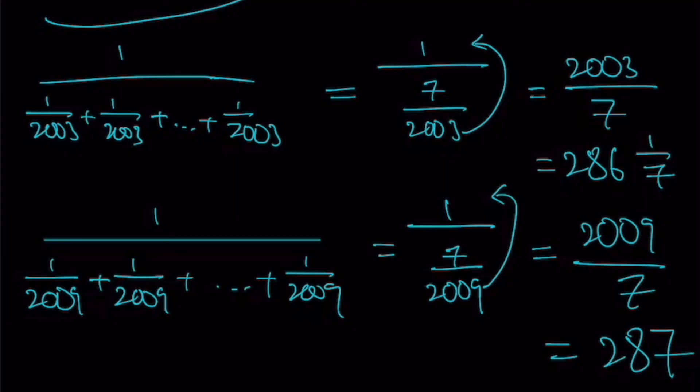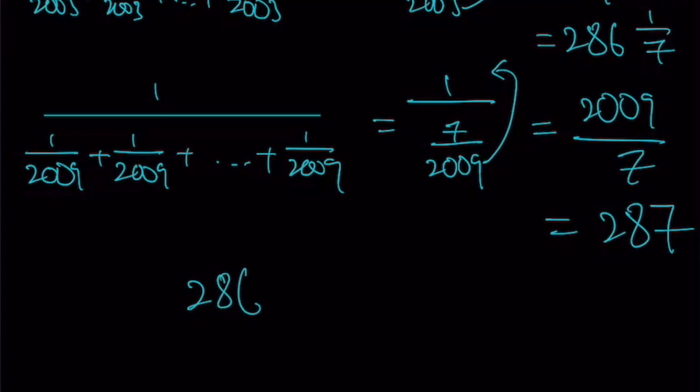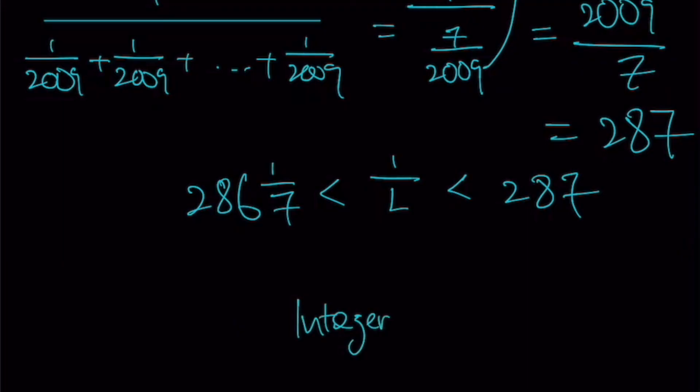Alright. So from here, you can see that 1 over L falls in between these two numbers. Your range will be 286 1 over 7 less than 1 over L less than 287. And from here, we can deduce the answer as the integer part will be 286. Why it cannot be 287? Because of this inequality sign. It means less than. It does not have the less than or equal to. Okay. It is only a less than. So it's in between 286 1 over 7 and 287. Therefore, the answer would be the integer part is 286.